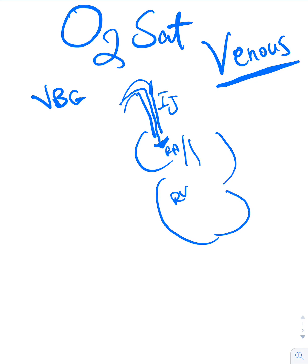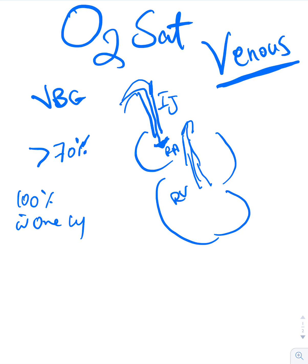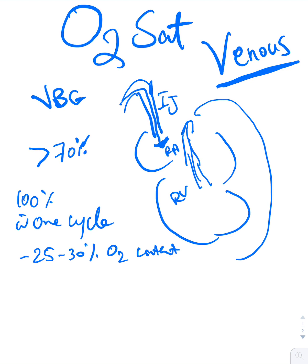The O2 saturation on the venous side is normally more than 70 percent. Going back to physiology: when blood is carrying oxygen, let's say you leave the heart with 100 percent oxygen — with one cycle, you will lose about 25 to 30 percent of your oxygen content. That's why, once the blood finishes a whole cycle, the oxygen content on the venous side should be about 70 percent or above.